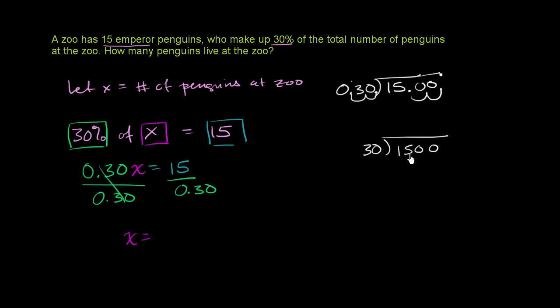So 30 goes into, let's see, it doesn't go into 1, it doesn't go into 15. It does go into 150. It goes into 150 five times. 5 times 30 is 150. Subtract, you get 0. And then 30 goes into 0, 0 times. So 30 goes into 1,500 50 times. So this right over here is equal to 50. And you can verify it: multiply 0.3 times 50, and you will get 15.